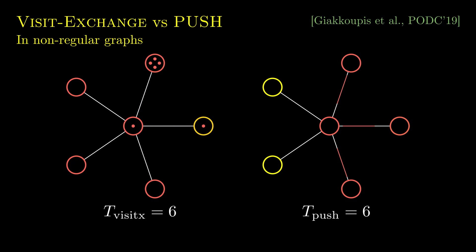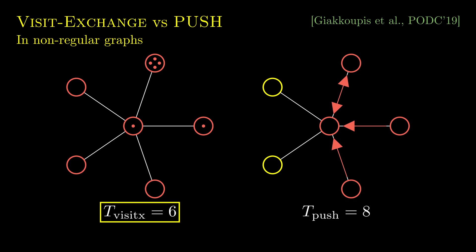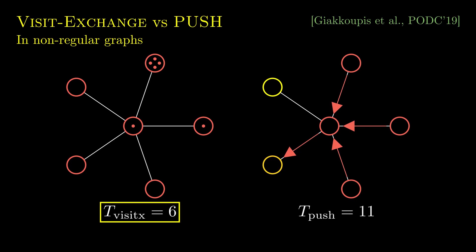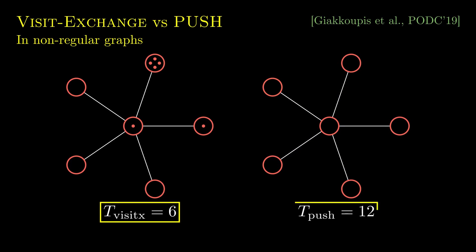The intuition is that in graphs with hubs, visit exchange seems to be faster, which can be attributed to the fact that each edge is equally likely to be used in each round. Note that the per-round message complexity of the two protocols is the same, linear in n. We should also note that there are examples where push is faster than visit exchange, presented in our referenced paper.